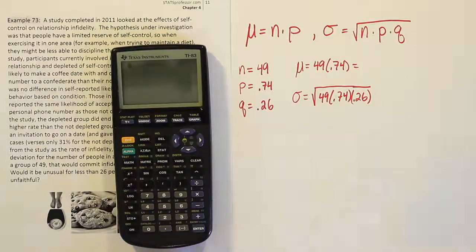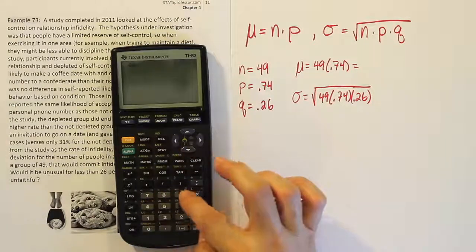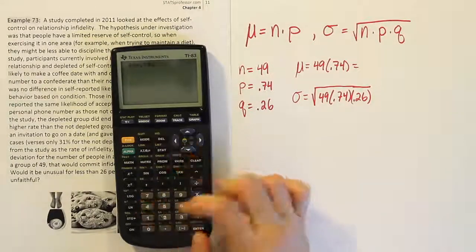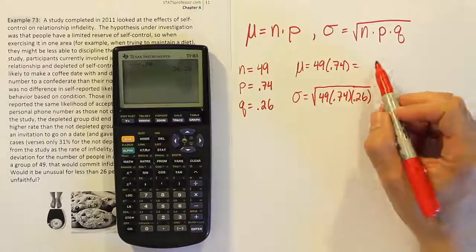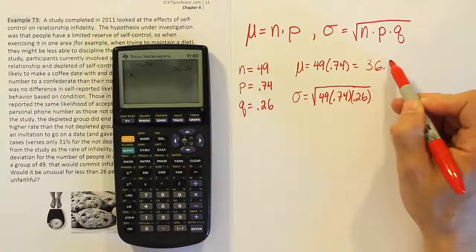So looking at it in our calculator, we have 49 times 0.74, or in other words, 74 percent of 49. We'll get 36.26, 36.26.